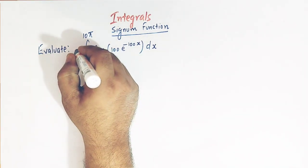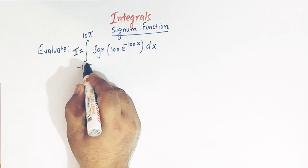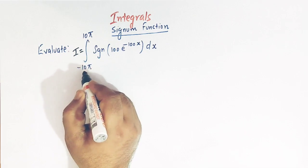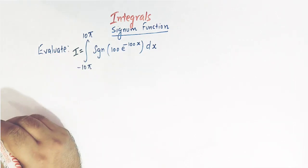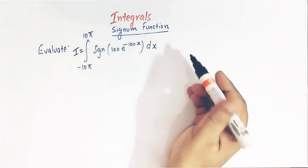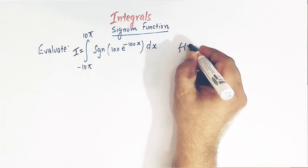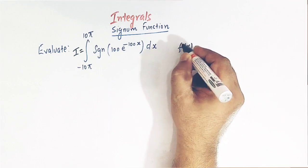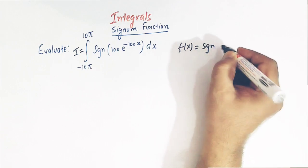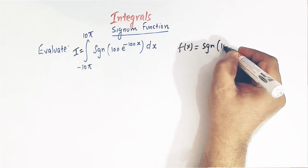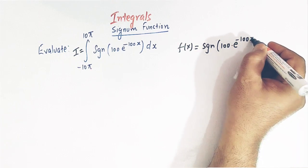Let us first call this integral as I. We see that the lower limit is minus 10 pi and the upper limit is 10 pi. The function, or the integrand, let us call it f of x. So f of x is signum of 100 times e raised to minus 100 x.